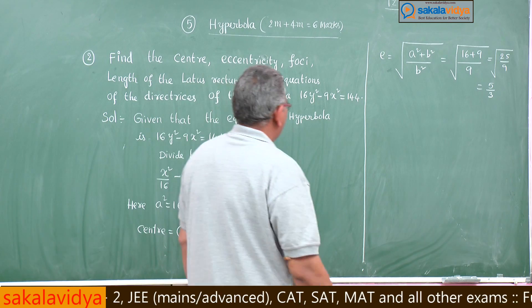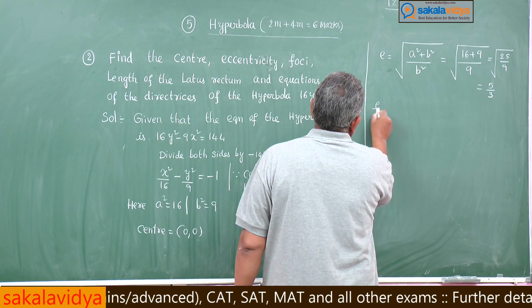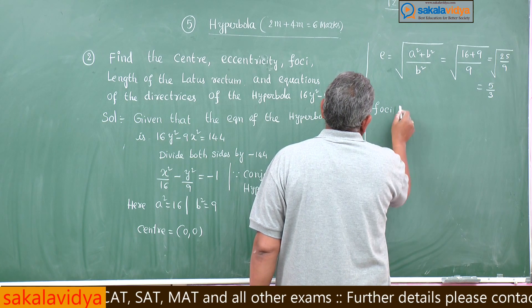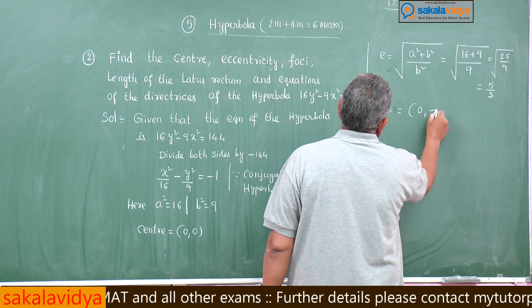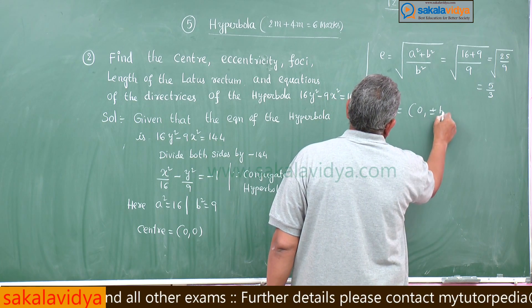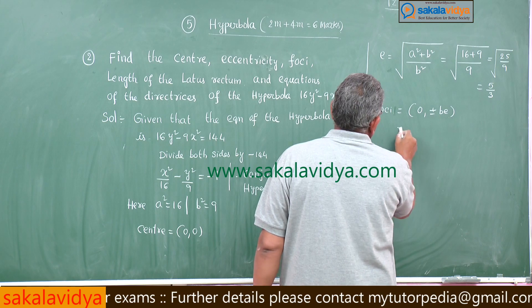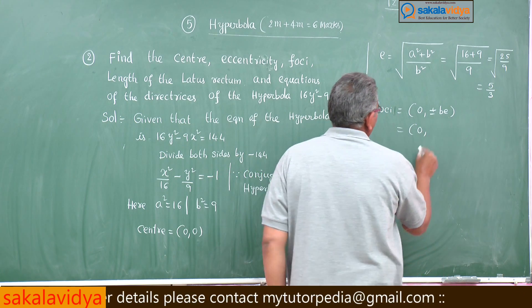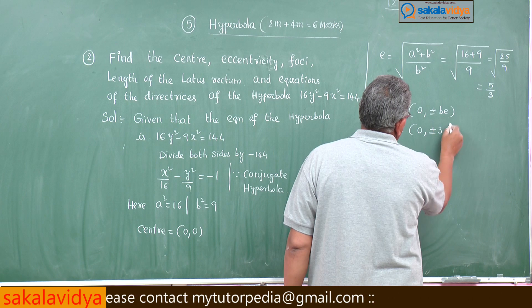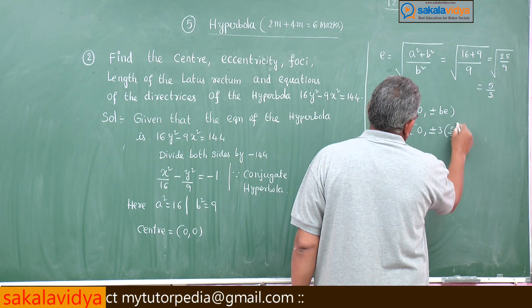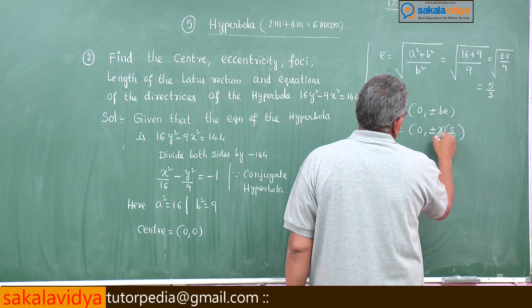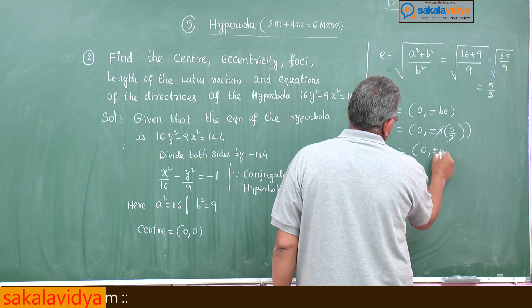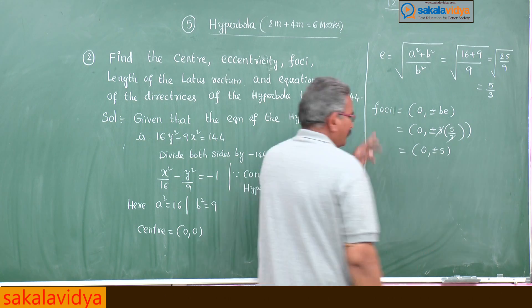Next, the foci. Since it is a conjugate hyperbola, the foci are at (0, ±be). So that is (0, ±3 × 5/3) — the 3s cancel — giving foci at (0, ±5).